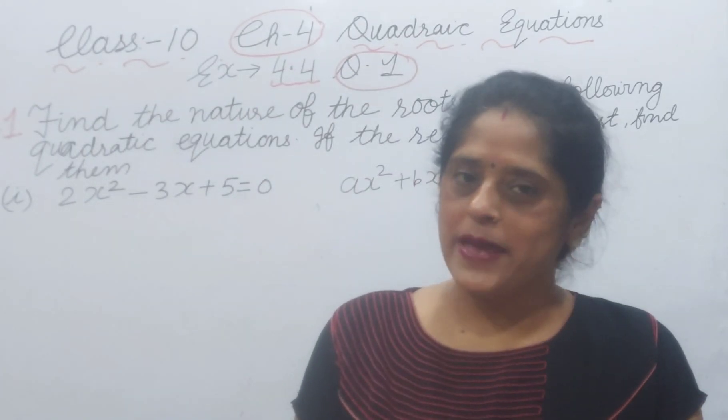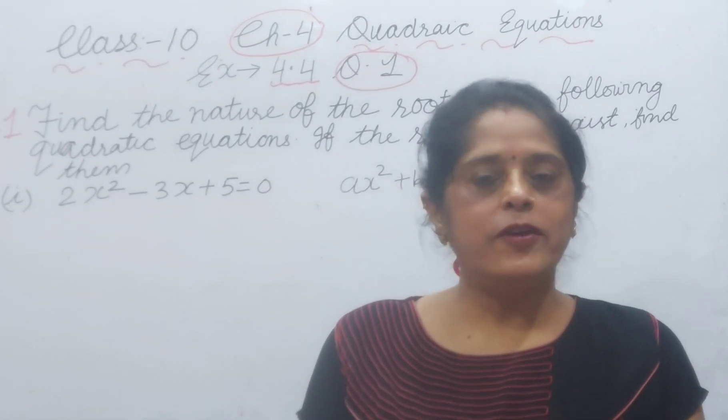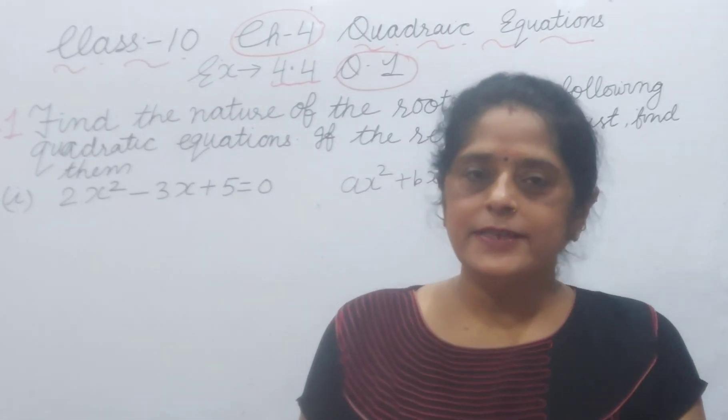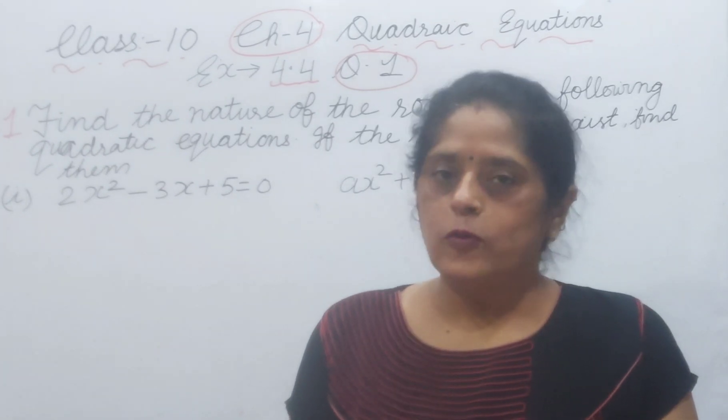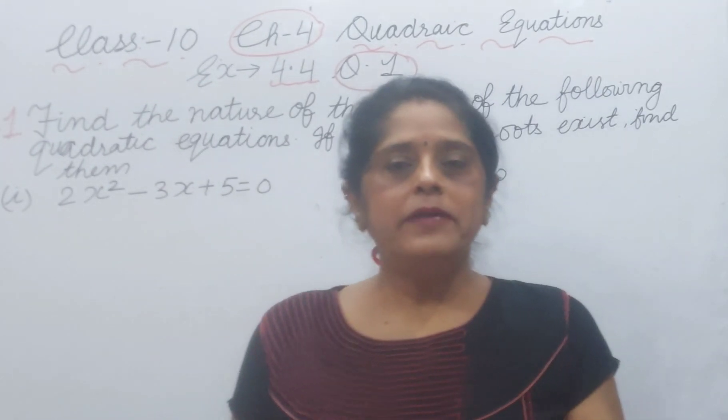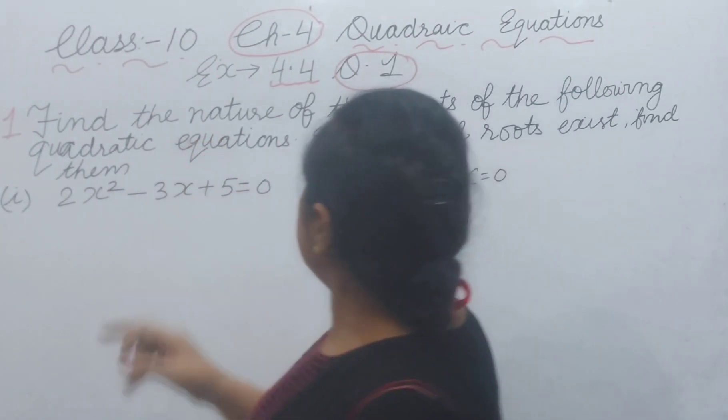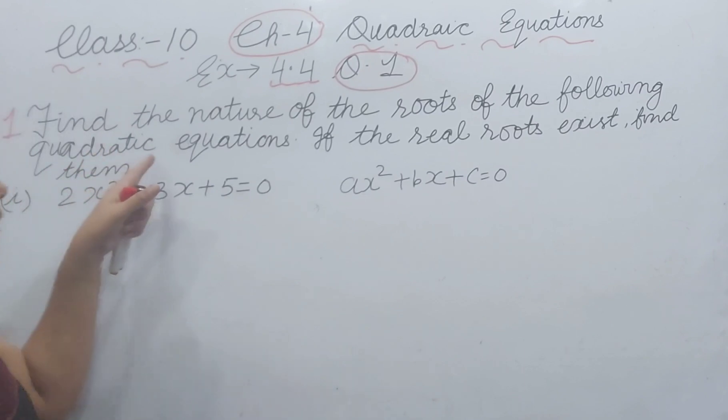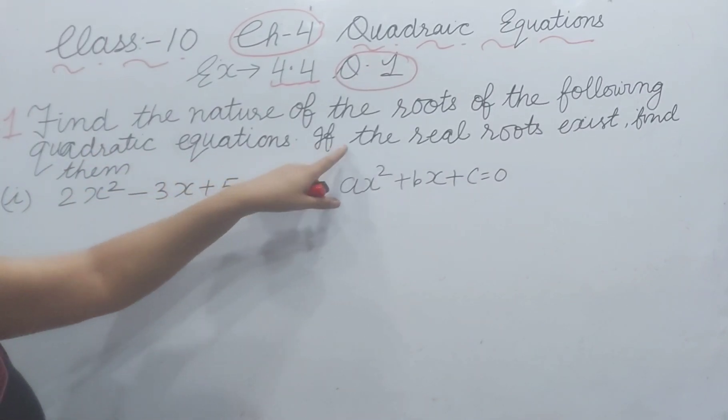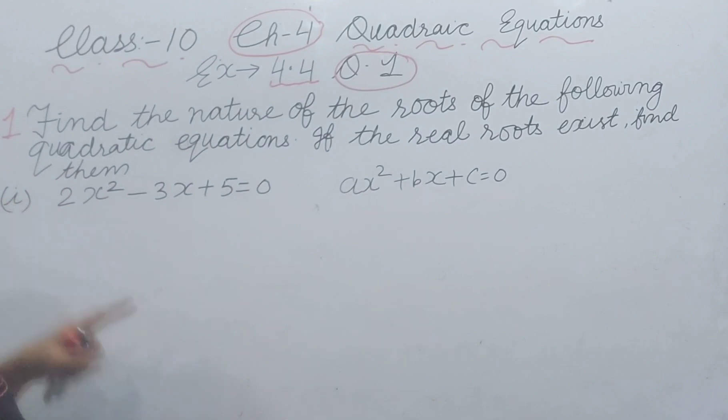Hello everyone, welcome back to my channel Lovely Maths. Today I will explain Class 10, Exercise 4.4, Question Number 1. Question Number 1 has three parts. One by one I will explain. First see the statement: Find the nature of the roots of the following quadratic equations. If the real roots exist, then find them.